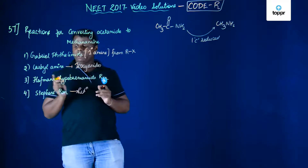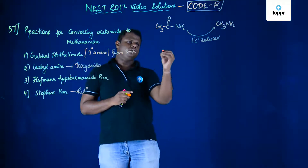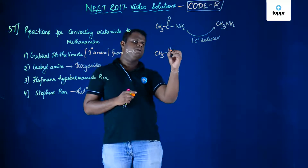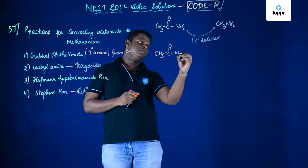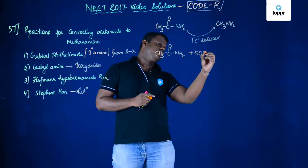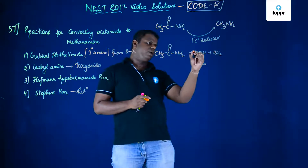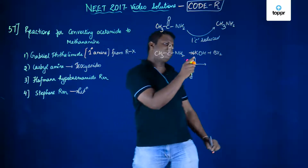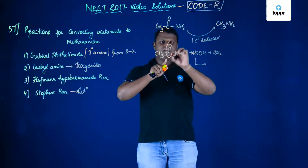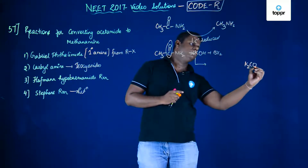The only option left is the Hoffman hypobromide reaction. Let's have a look at the reaction. You have CH3C(=O)NH2, and if this is treated with KOH and Br2, it requires four moles of KOH. The oxygen goes with K and forms K2CO3.